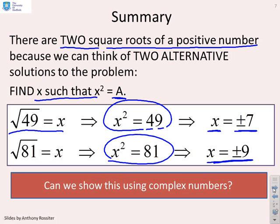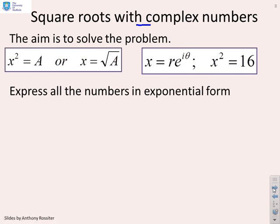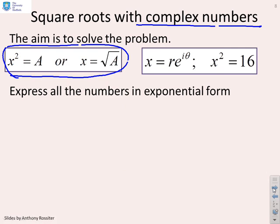Now we want to make the link back to complex numbers, because by doing this you'll develop a skill you need when solving problems more difficult than the square root. For square roots with complex numbers, we're trying to solve x squared equals a, which is equivalent to x equals the square root of a. We're going to write numbers in exponential form as complex numbers — let x equal r e to the i theta. I want to solve x squared equals 16, and you'll notice there are now two unknowns: r and theta.